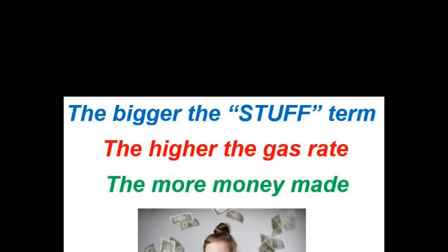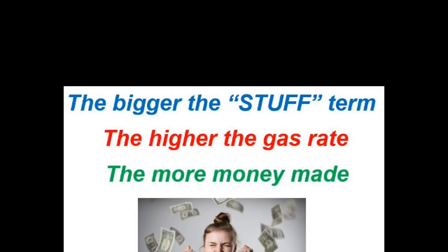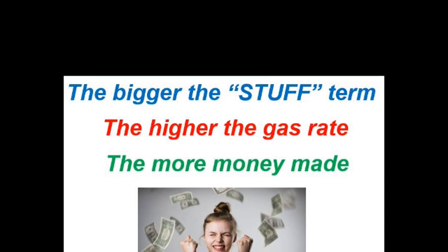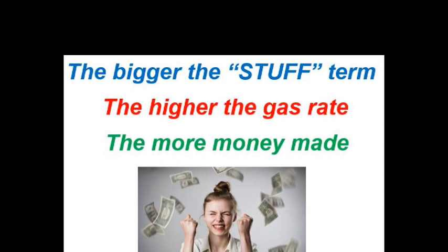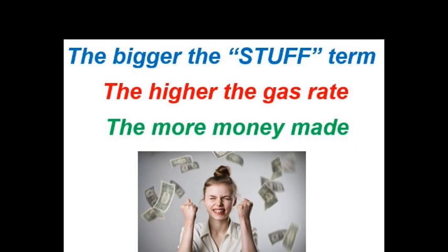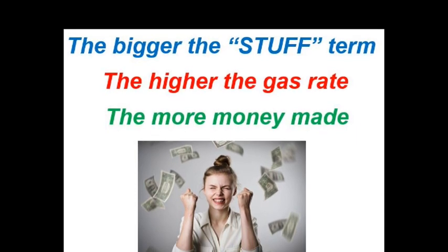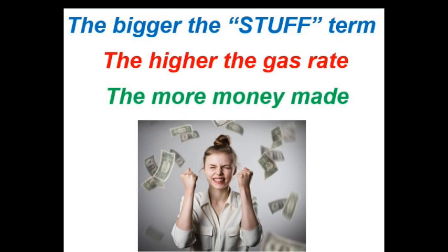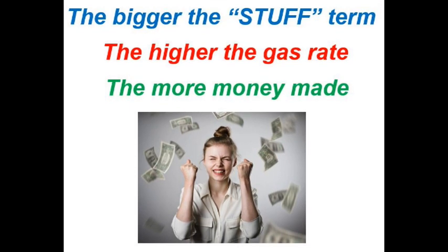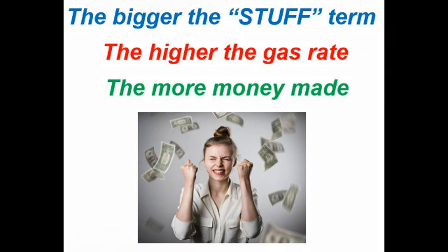Because a higher flow rate increases the cash flow from the well, petroleum engineers do everything they can to maximize the stuff term. There's a lot of stuff, so to speak, in that stuff term. Like the properties of the reservoir rock, the viscosity or thickness of the fluid, and how efficiently the well is connected to the reservoir. Much of the stuff is beyond our control, but we have two methods which we commonly use to increase the flow rate from the well.